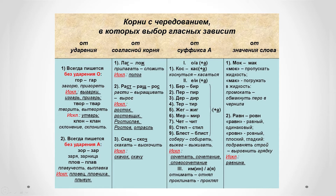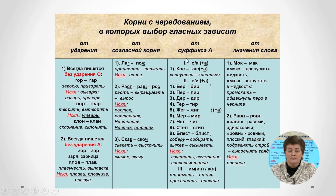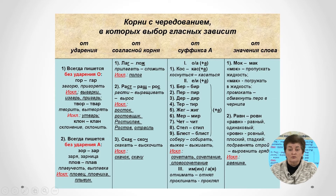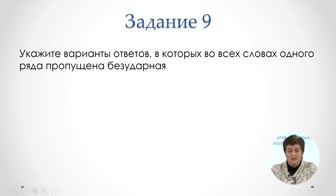Вы видите четыре колонки. Первое условие — ударение и корни, зависящие от него. Второе — согласная корня и список корней. Третье — суффикс «а»; обратите внимание на нижнюю строчку, я скажу об этом чуточку позже. И четвёртое — корни, зависящие от лексического значения. Ну что ж, попробуем разбирать задание.